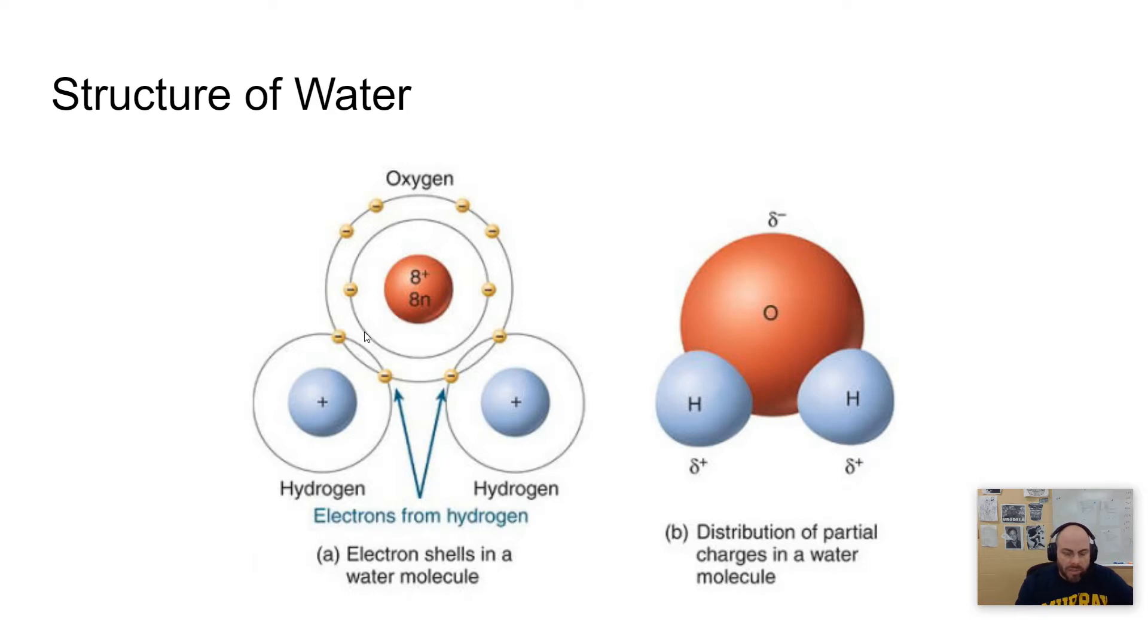And when you have atoms that bind together and share their electrons, this is called a covalent bond. Co sharing valent stands for the valence electrons. And so it's sharing those valence electrons, so they're covalent. They're sharing electrons, a very strong bond.